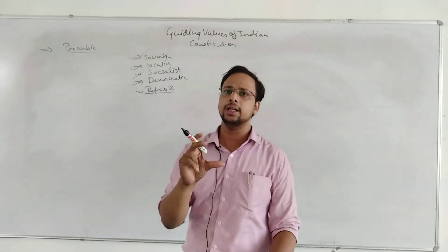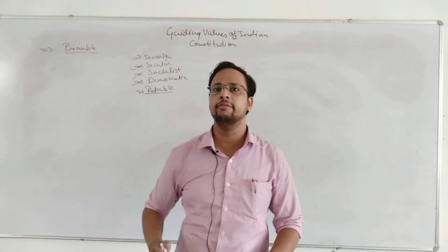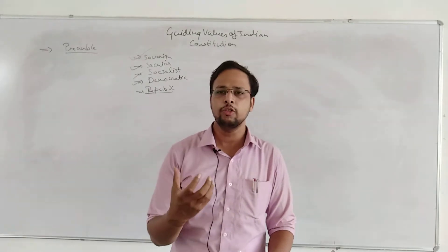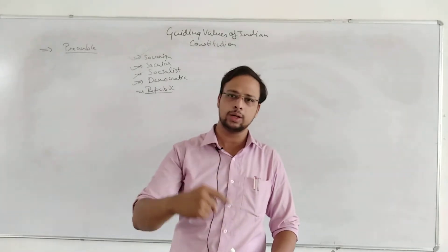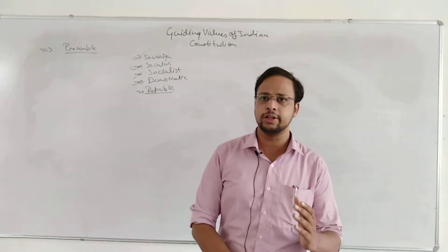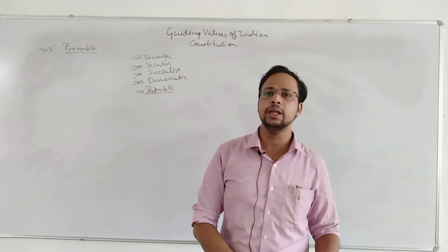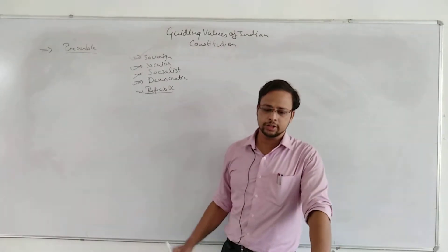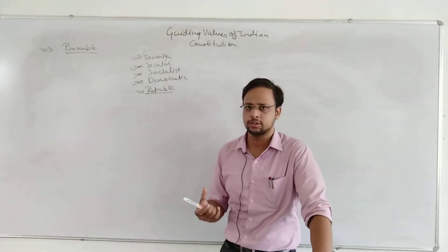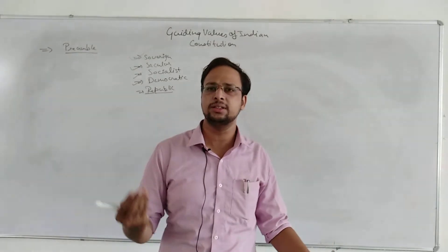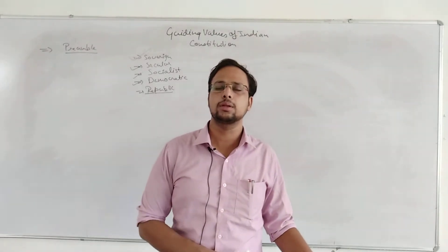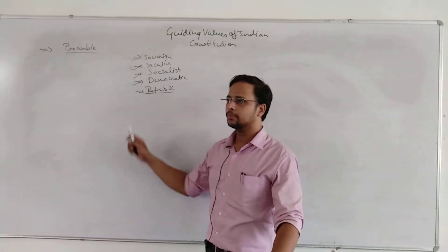The last term is 'republic.' Republic means there is no hereditary ruler. Under monarchy, there is hereditary rule — the king becomes the ruler, then his son, then his son's son, forming a family tree running the country. But in a republic, there is no hereditary ruler. The head of state is elected for a fixed tenure by representatives. In India, the head of state is the President and the head of government is the Prime Minister.